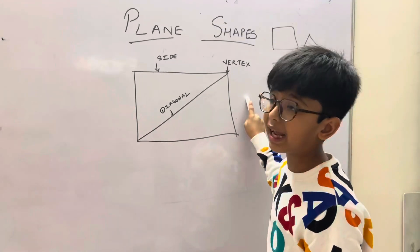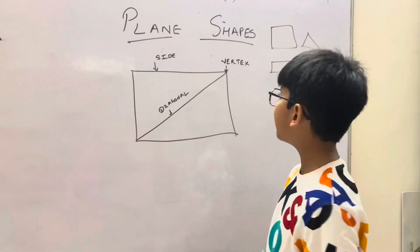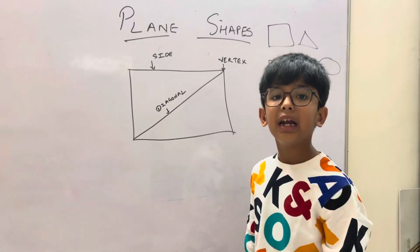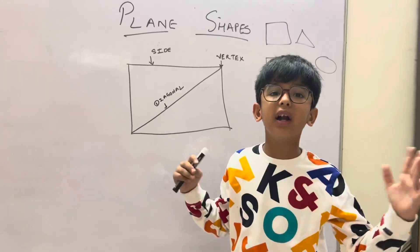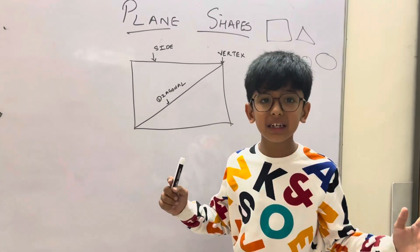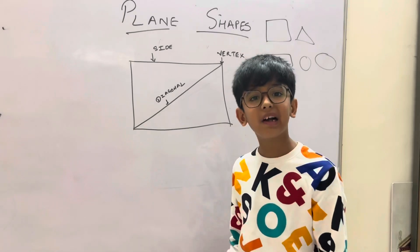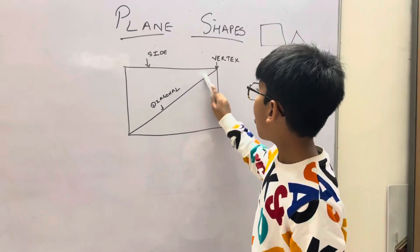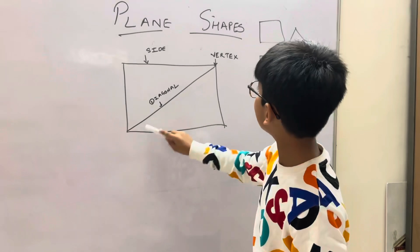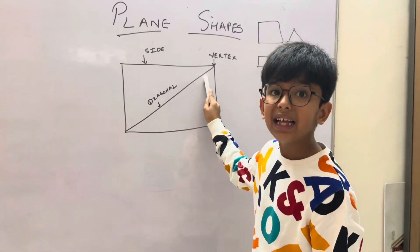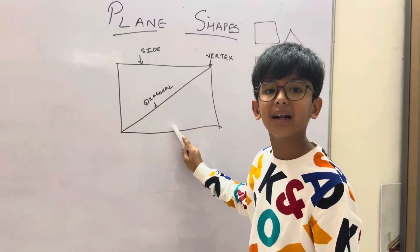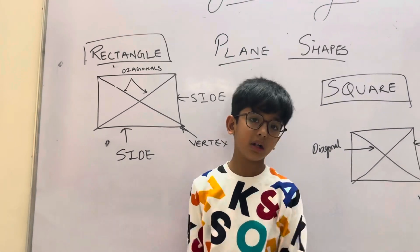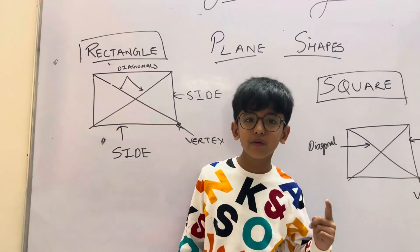A vertex, or corner, is where two sides meet. The definition of diagonal is: the line joining two opposite vertices is called a diagonal. This is a simple chart on the board.